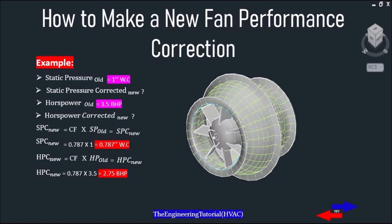Static pressure corrected new equals the correction factor multiplied by static pressure old: 0.787 × 1 = 0.787 inches of water column. Horsepower corrected new equals the correction factor times horsepower old: 0.787 × 3.5 = 2.75 brake horsepower.